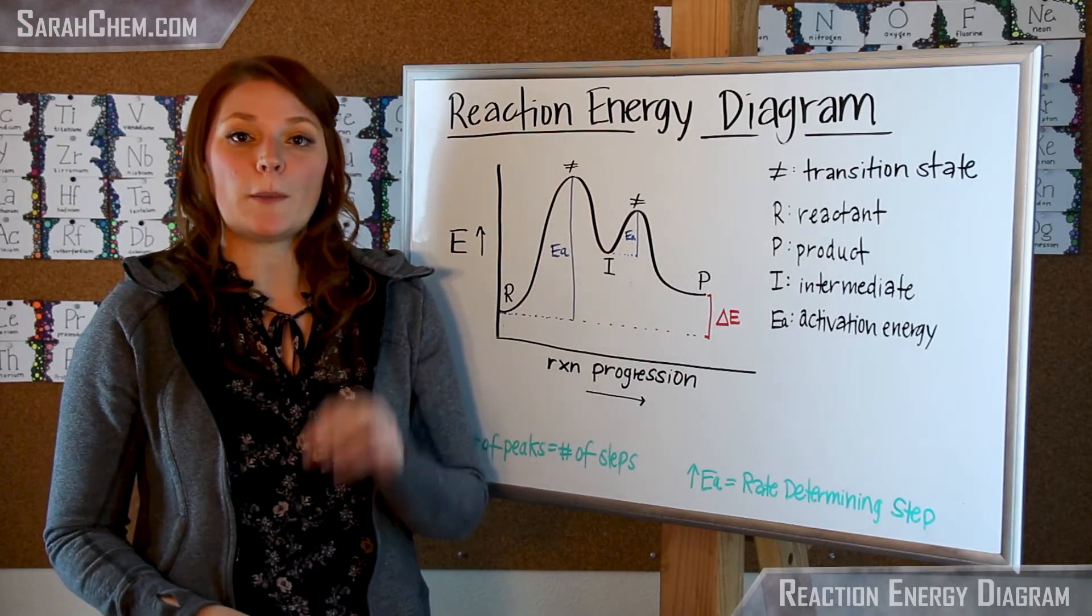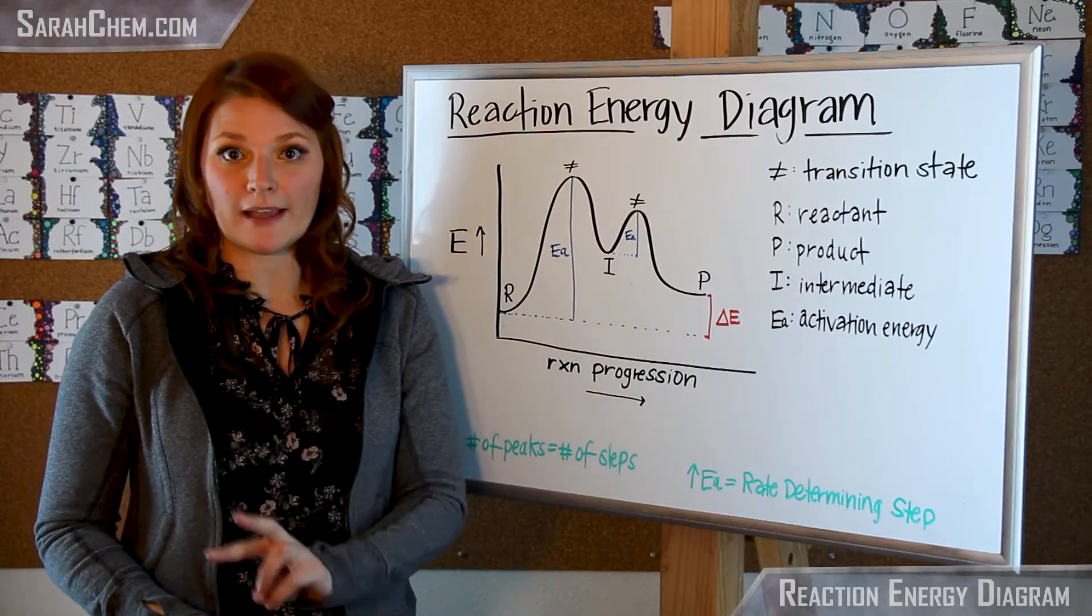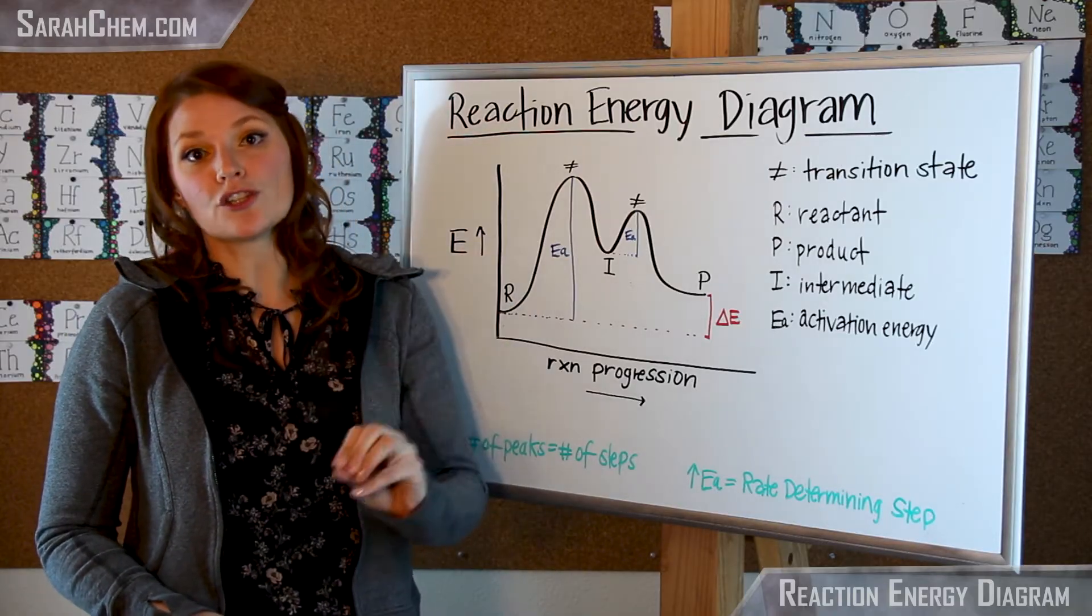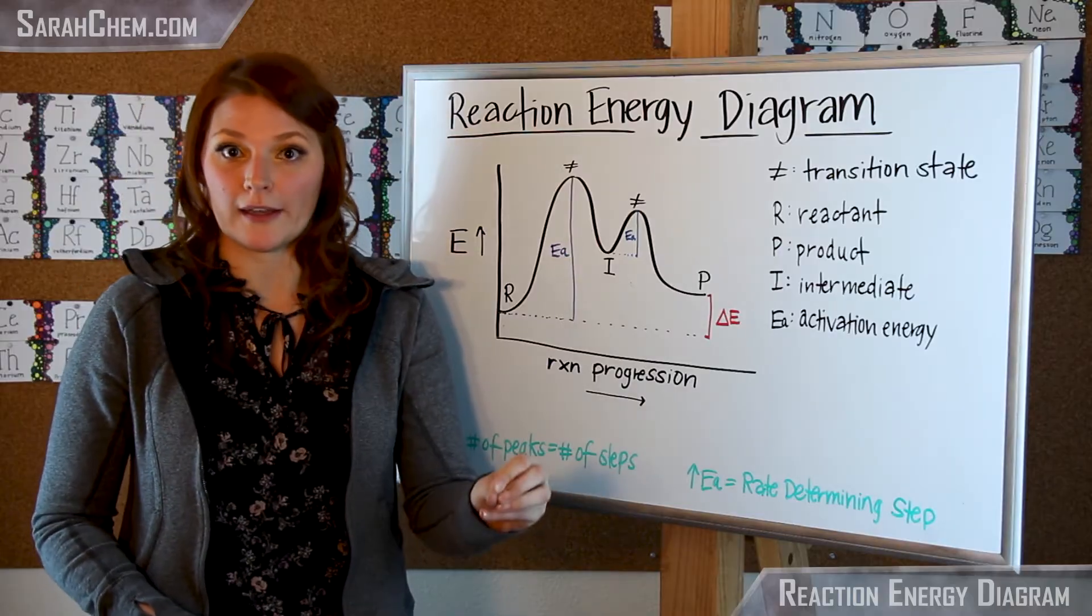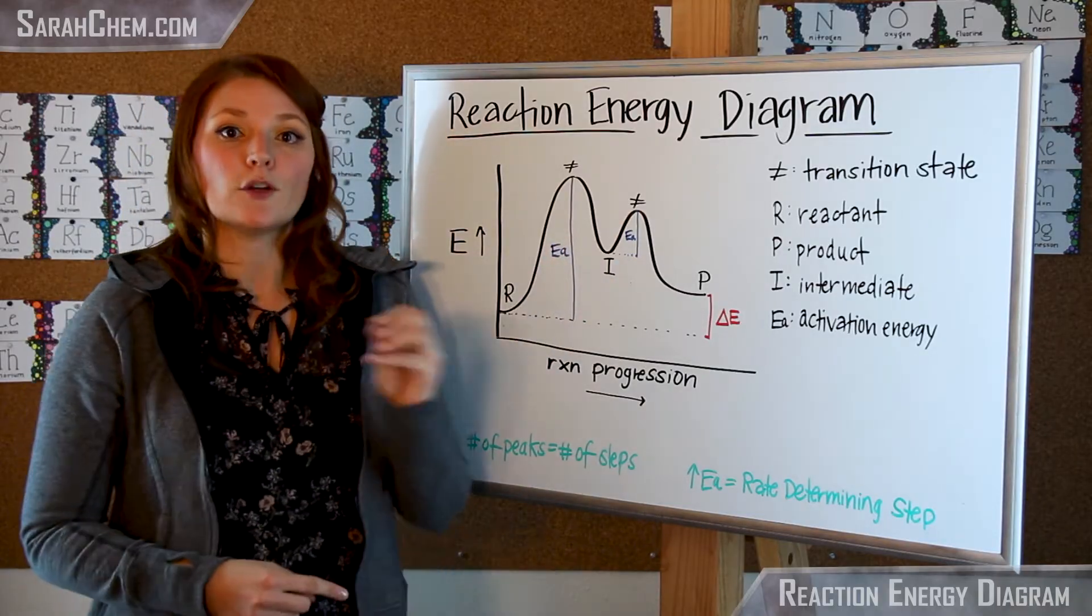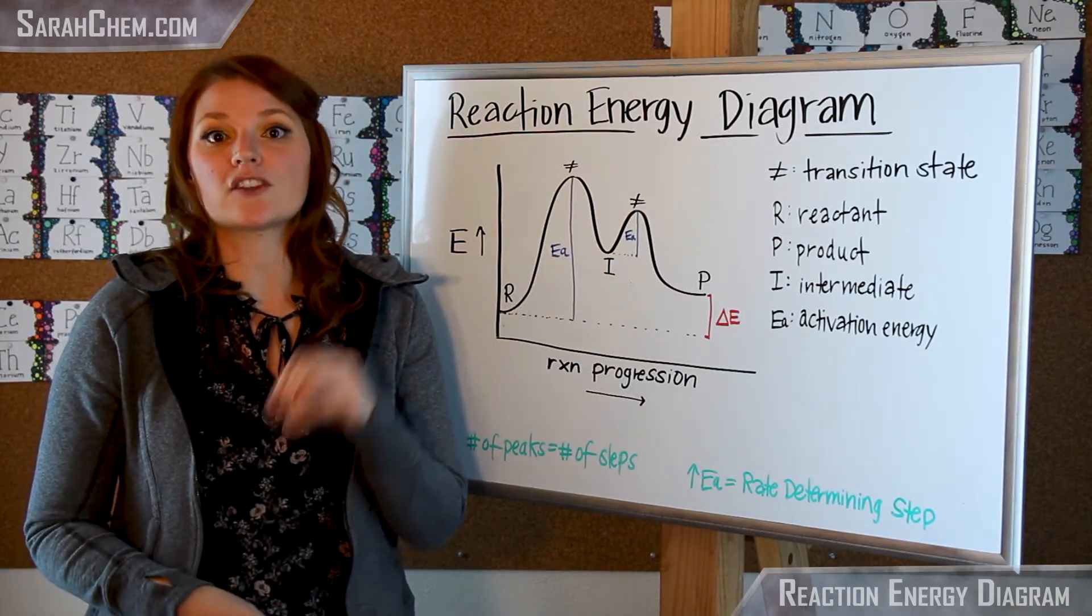Those two peaks represent the fact that there are two steps in the reaction mechanism required in order to go from the reactant to the product. The number of peaks you have represents the number of steps in the reaction mechanism.